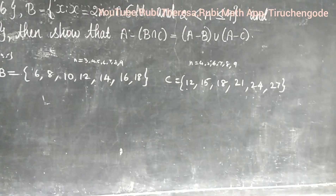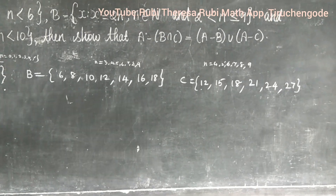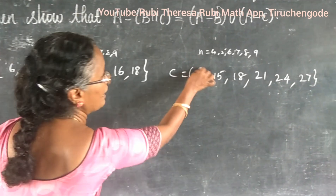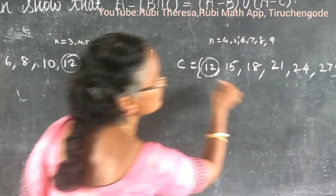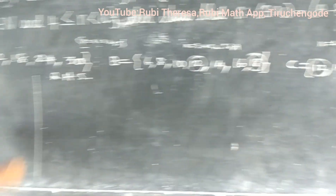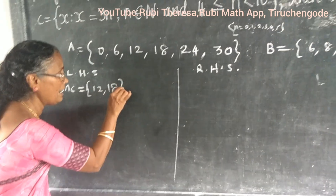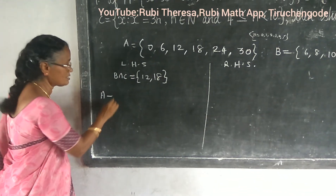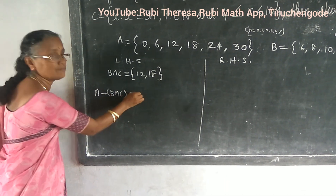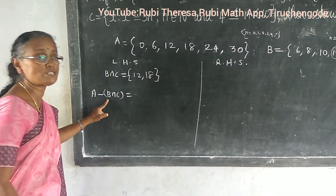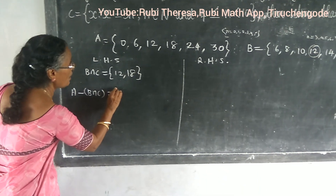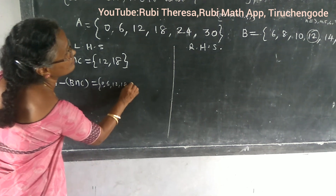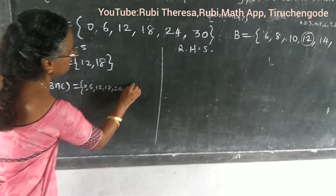The common elements of B and C are 12 and 18. So B intersection C equals {12, 18}. Now find A difference (B intersection C). A equals {0, 6, 12, 18, 24, 30}, and B intersection C equals {12, 18}. Removing 12 and 18 from A gives {0, 6, 24, 30}.